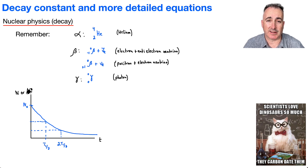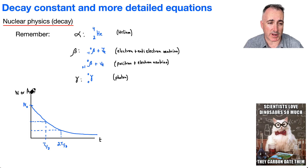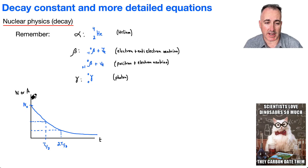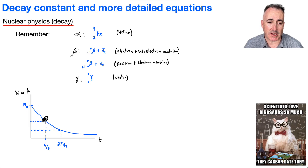Let's not forget about these exponential decay curves. So N — this could be the number of particles, or the activity, or the mass — if we start off with some initial amount, then this curve is exponential, a negative exponential. At a certain time T½, you've got exactly half of what you started with. And if you go another one of those times, you've got half of a half, and so on. That's why it's called a half-life.